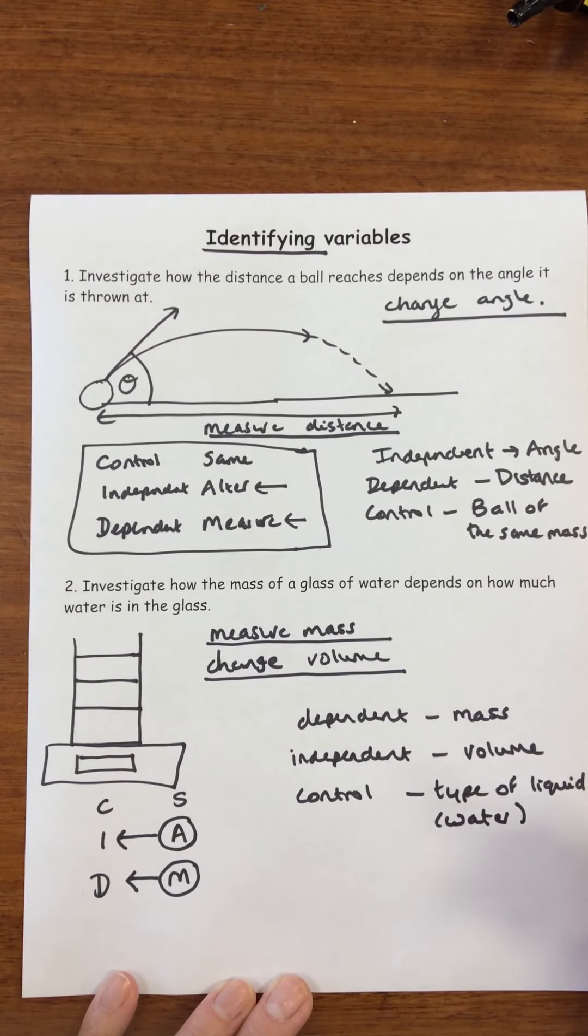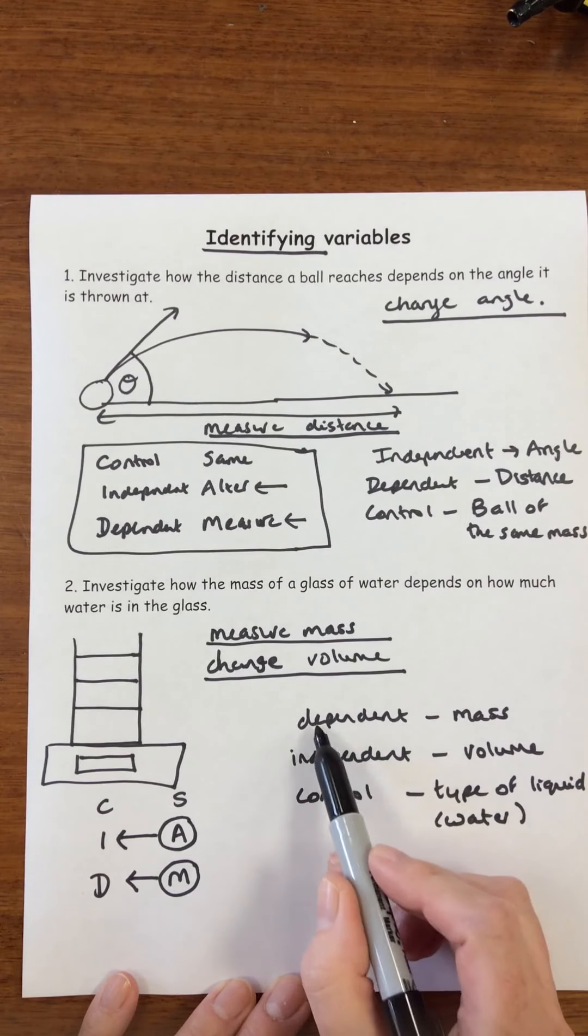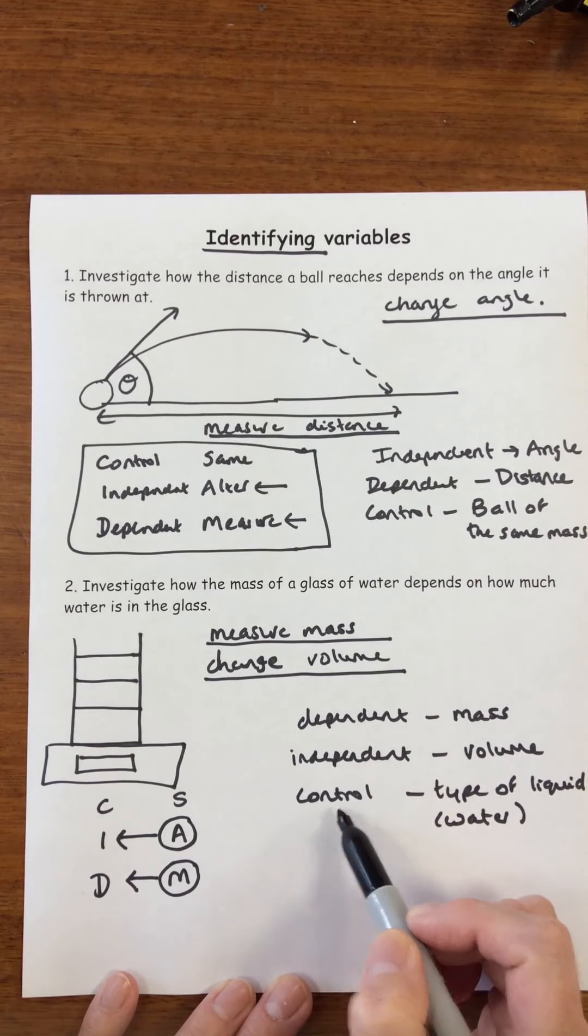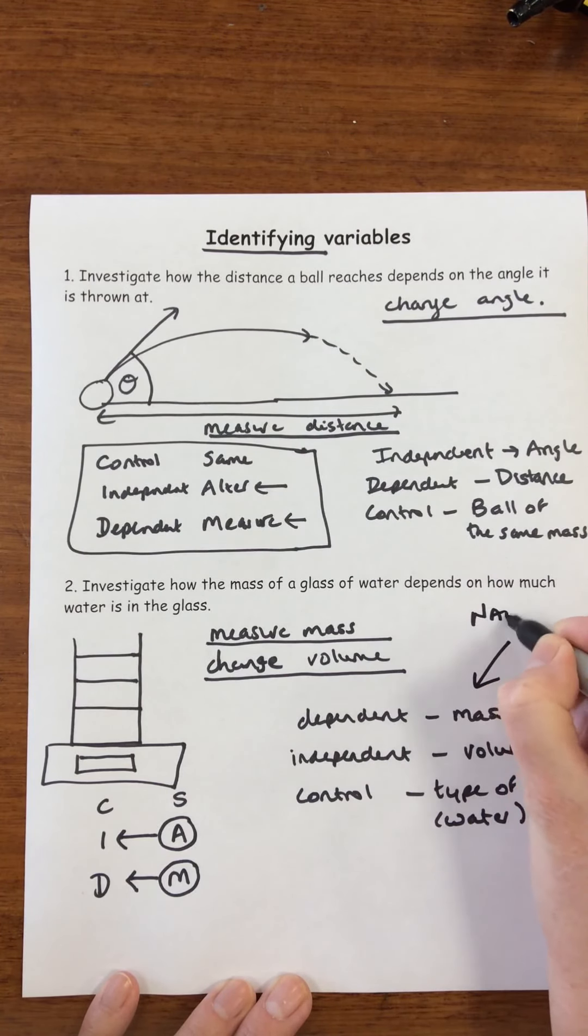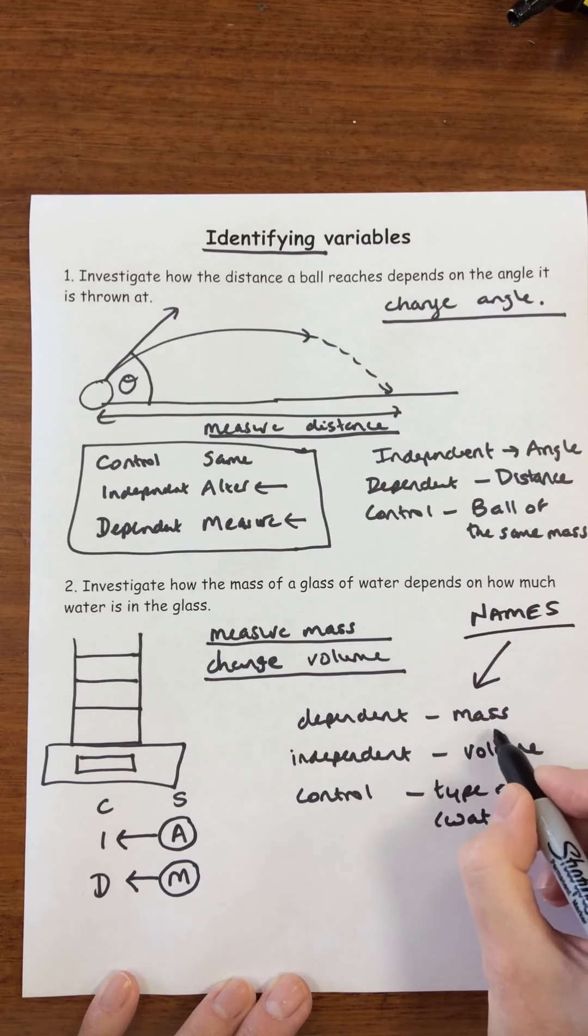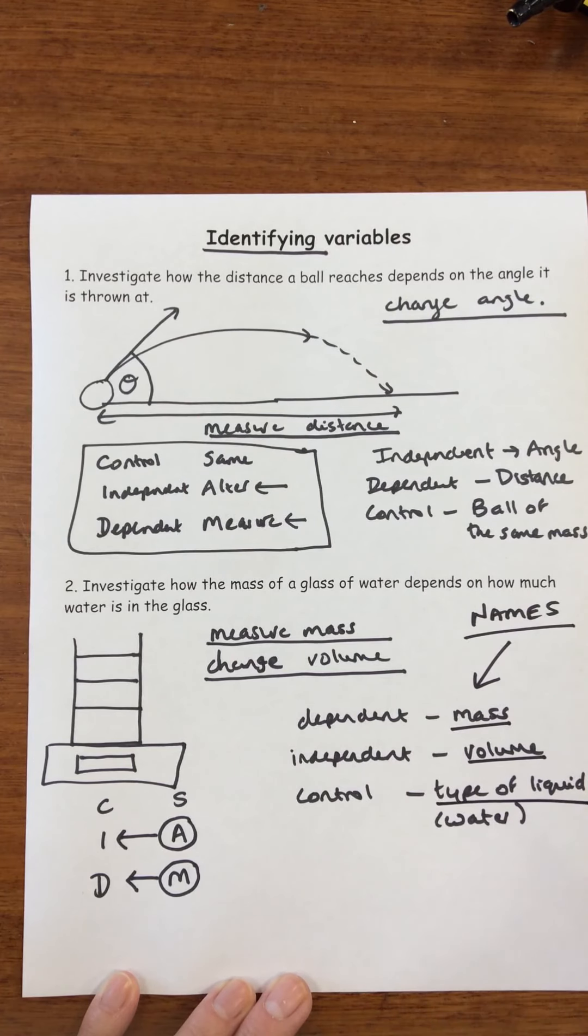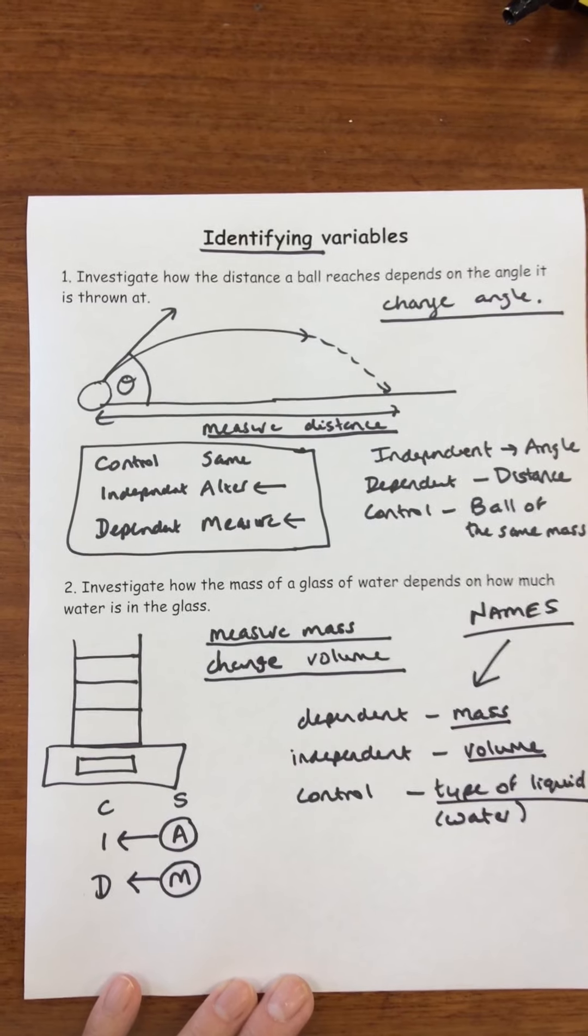And also remember, when it asks you to identify a variable, it's not asking you to write down dependent, independent or control. It's actually asking you to use the names of the variables. So in this case, the names of our variables, identifying the variables, are mass, volume, and then the type of liquid. I hope that helps. Thank you.